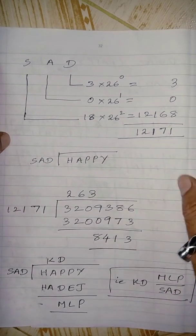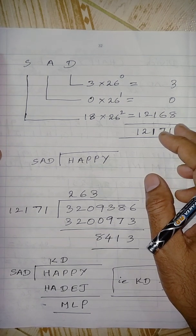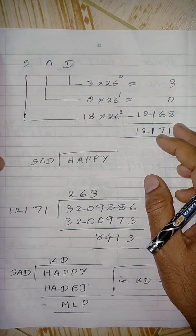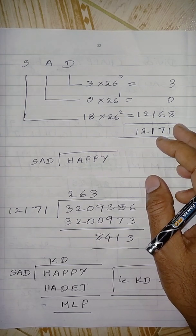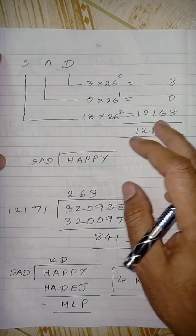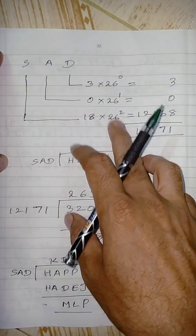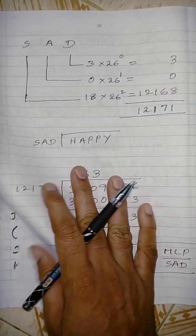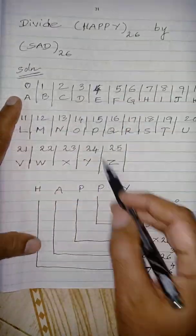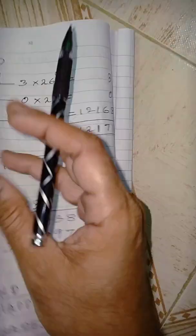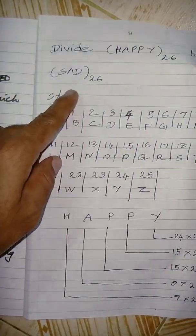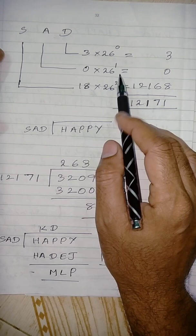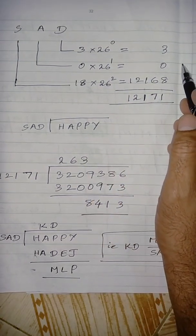Similar to binary to decimal — in binary, base 2, only 0 and 1 are allowed. To convert to decimal we use 2 power 0, 2 power 1, 2 power 2, and so on. In a similar manner we are using base 26 here. So HAPPY has been converted into decimal, base 10. Now similarly, SAD — we are going to convert base 26 into decimal, that is base 10.